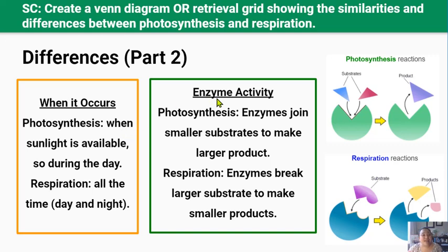Difference five — enzyme activity: while the complex reactions in both processes are catalyzed by enzymes, the reactions the enzymes catalyze are different. During photosynthesis, enzymes primarily build larger molecules like glucose from smaller molecules like carbon dioxide and water — this is an anabolic reaction. During respiration, enzymes primarily break down larger molecules like glucose to form smaller molecules like water and carbon dioxide — this is a catabolic reaction.